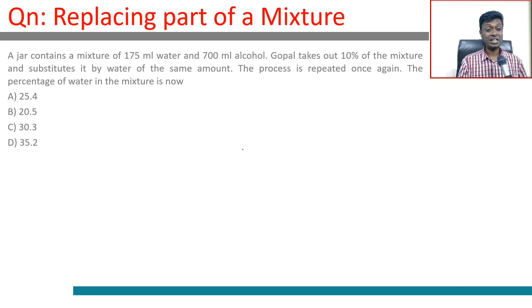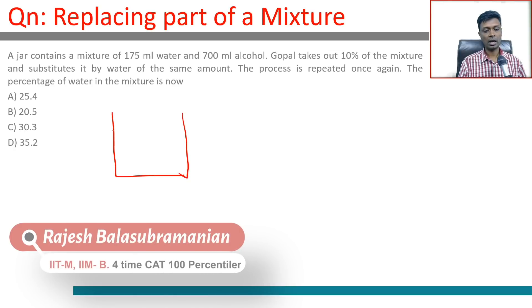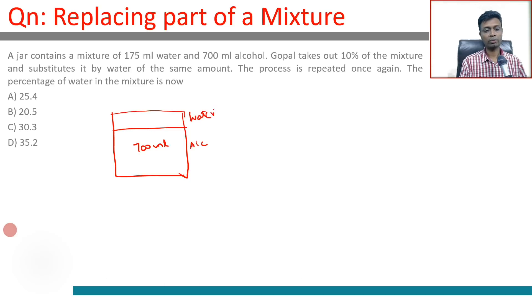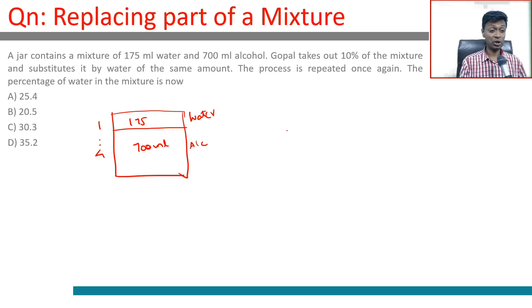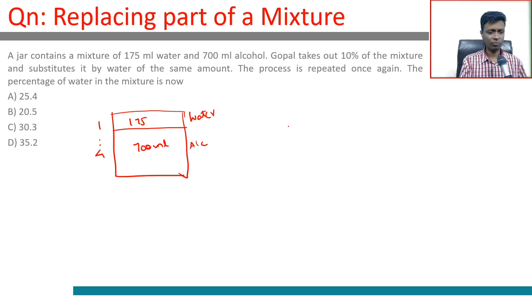A jar contains a mixture of 175 ml water and 700 ml alcohol. Water is 175 and 700 is four times 175, so the ratio is 4:1. Gopal takes out ten percent of the mixture and substitutes it with water of the same amount. The process is repeated once again. The question asks for the percentage of water in the mixture now.